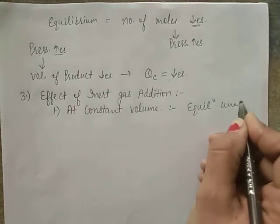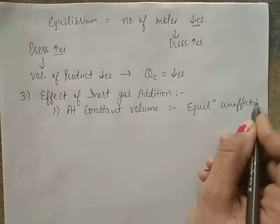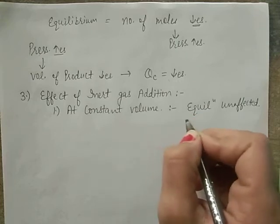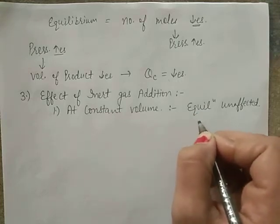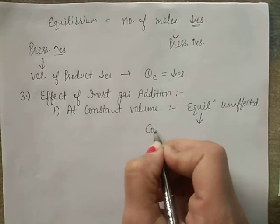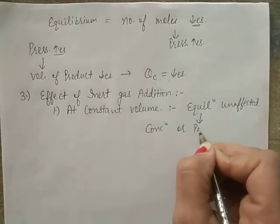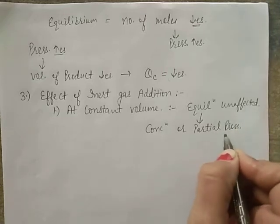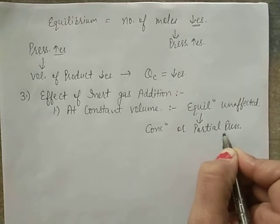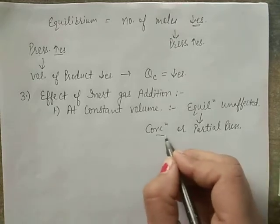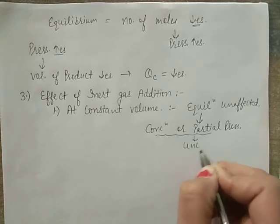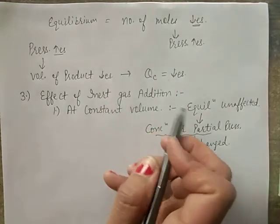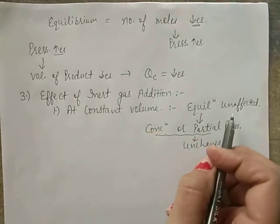The reason is that at constant volume, the partial pressure or molar concentration of any substance remains unchanged. Since these are unchanged, the inert gas has no effect on equilibrium at constant volume.